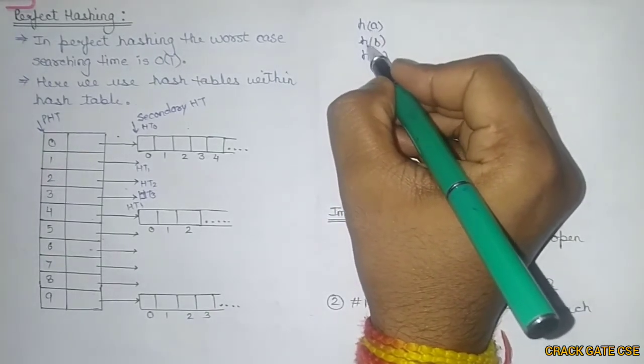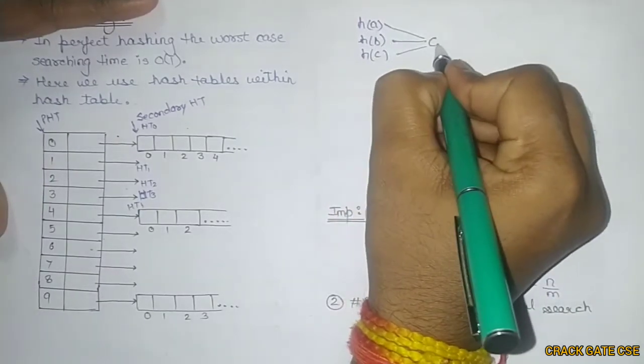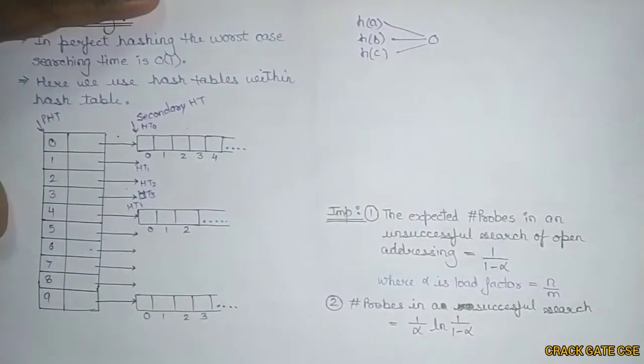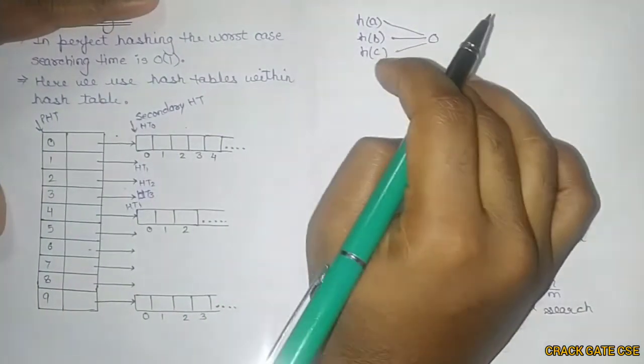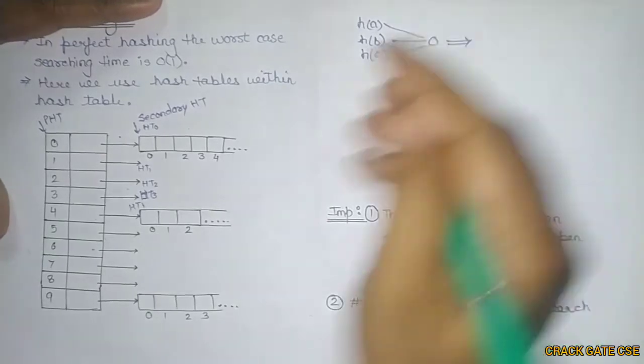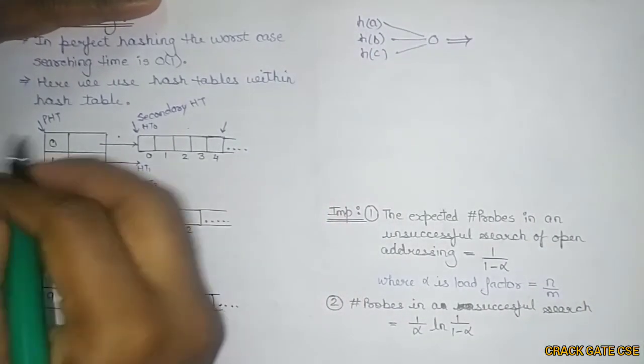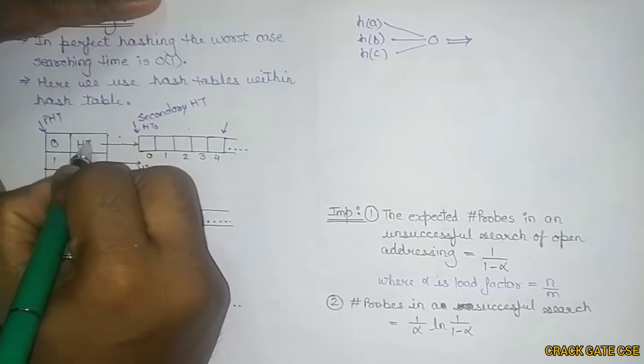I'm applying a hash function on these three key values. Let's say I'm getting the same address 0 for all of these three - that means we're getting a collision. To resolve that, we'll be moving to this inner hash table for the 0th one, that means ST0.